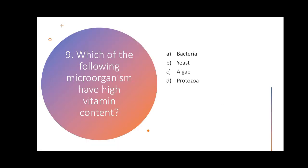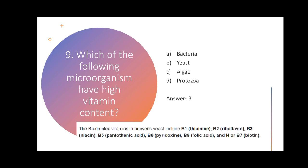Next question: which of the following microorganisms has high vitamin content? Options are bacteria, yeast, algae, or protozoa. Yeast has the highest vitamin content, containing vitamins B1, B2, B3, B5, B6, B9, B7, and vitamin H. Almost all B-vitamins are present in yeast, making it a high vitamin content microorganism.